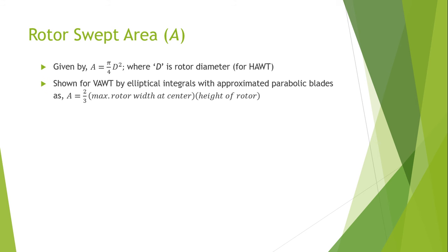For vertical axis wind turbine, the rotor area is given by elliptical integrals with approximated parabolic blades. The swept area for vertical axis wind turbine is given by 2 by 3 times the maximum rotor width at the center multiplied by the overall height of the rotor.